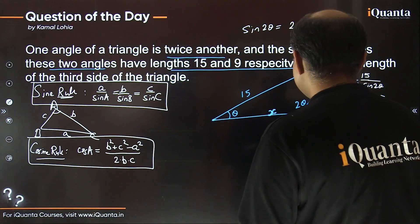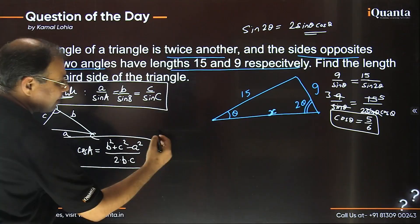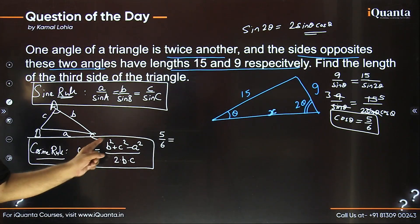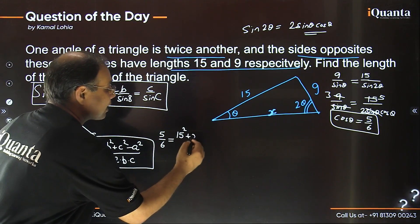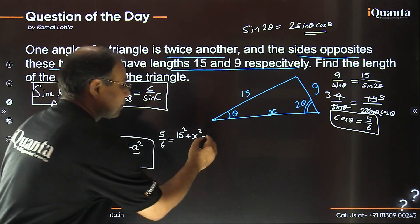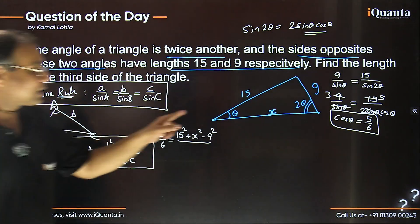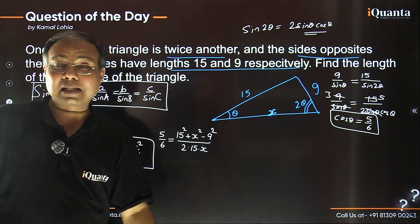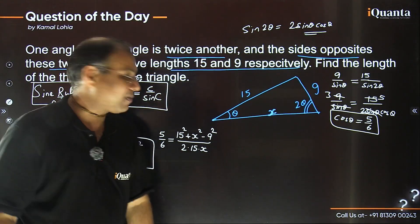Applying the cosine rule to our triangle: cos theta, which is 5 over 6, equals (15 squared plus X squared minus 9 squared) over (2 times 15 times X). The adjacent sides to angle theta are 15 and X, and the opposite side is 9. This gives us a relation from which we will get a quadratic equation in terms of X.